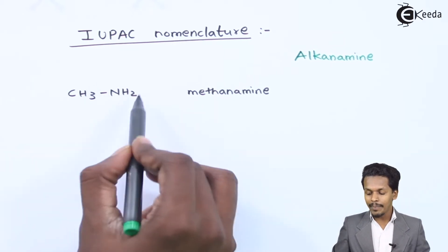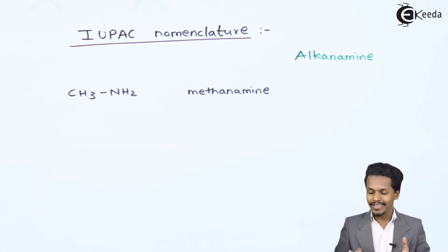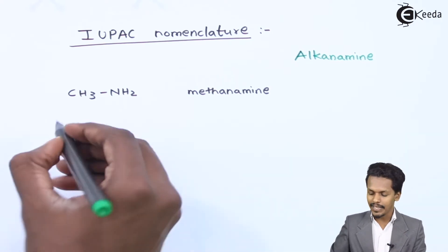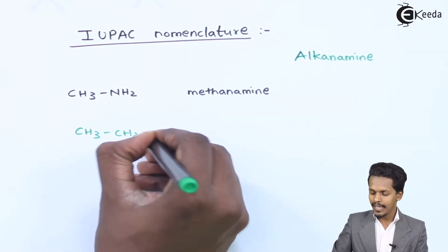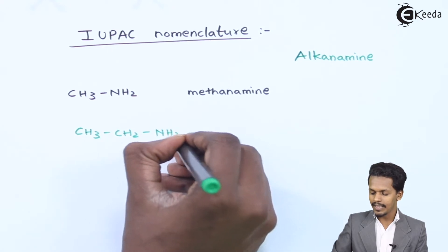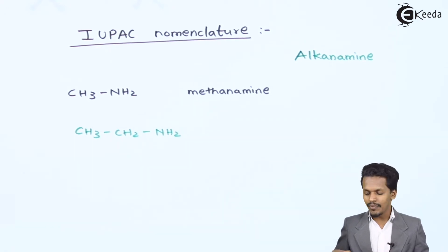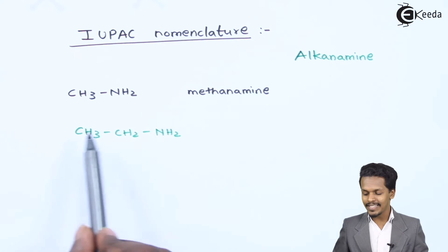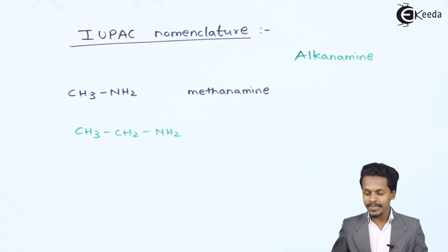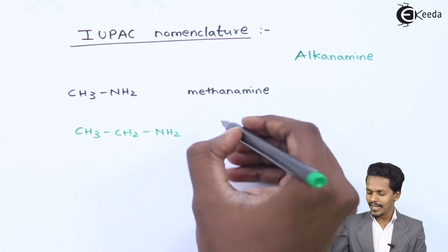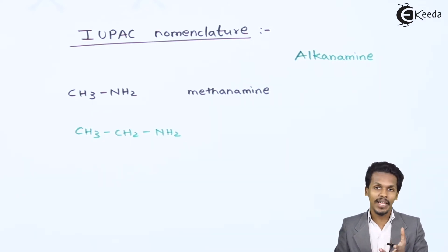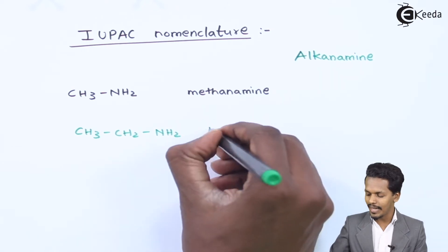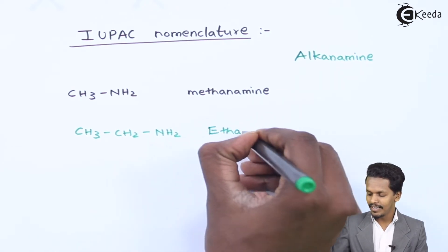Here there is only one amine group. For another example, consider CH3CH2NH2 — it consists of two carbon atoms, so as per the hydrocarbon it is ethane. The letter 'e' of ethane is replaced by amine, so the name of this one is ethanamine.